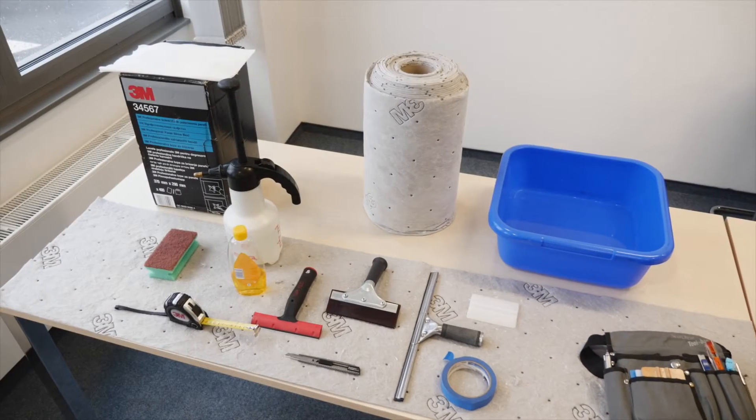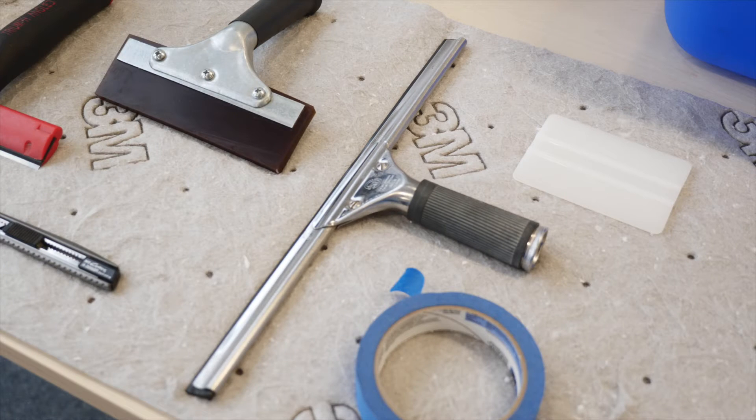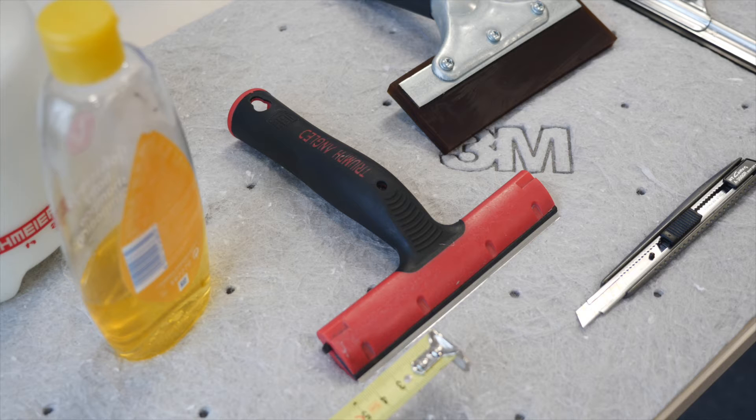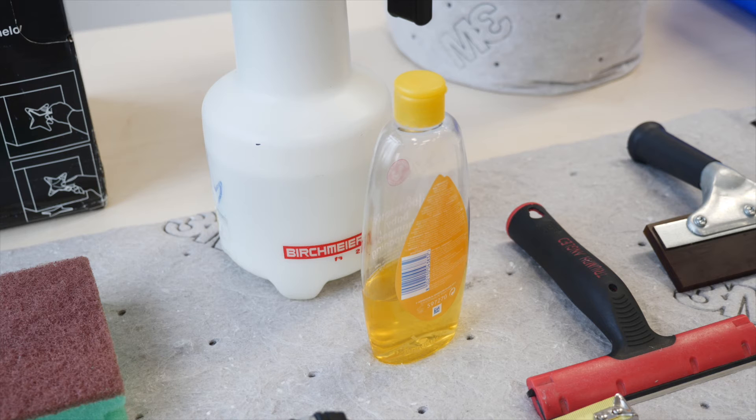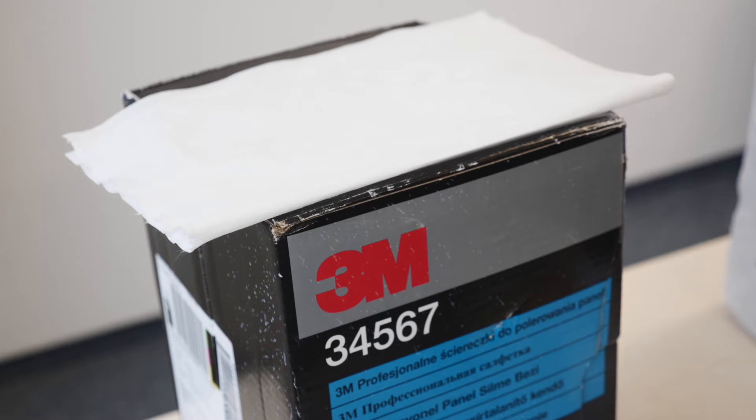Before you start installation, you must ensure that you have all the correct tools required for the job. In particular, a rubber window cleaning squeegee, a rubber window film squeegee with a maximum width of 15 cm, a scraper and stainless steel blades, cleaning and installation solution in a spray bottle, a plastic squeegee and lint-free paper towels.